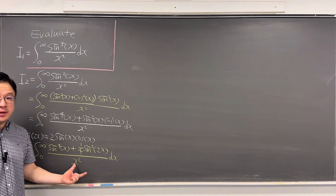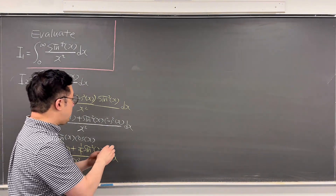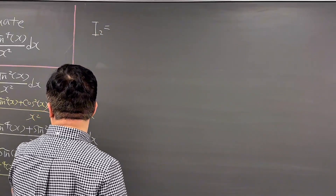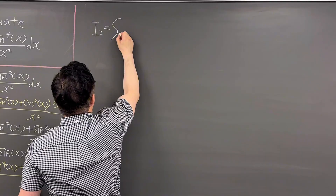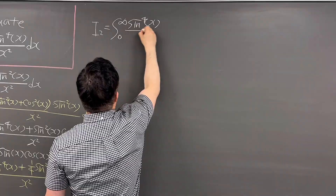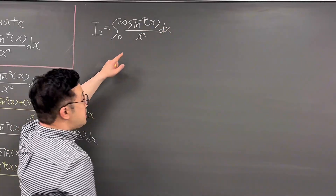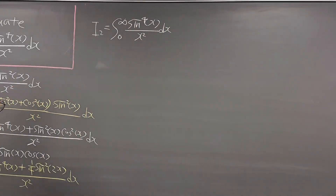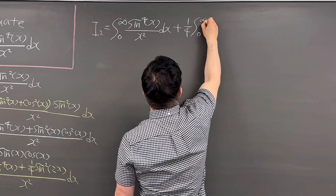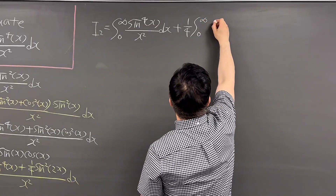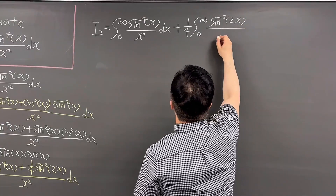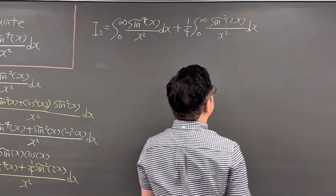Okay, then it looks like we can separate this integral into two integrals. So we're still working on I2. Integral I2 equals the integral from 0 to infinity of sine to the power of 4x over x squared dx — this is I1 that we are looking for — plus 1/4 times the integral from 0 to infinity of sine squared of 2x over x squared dx.